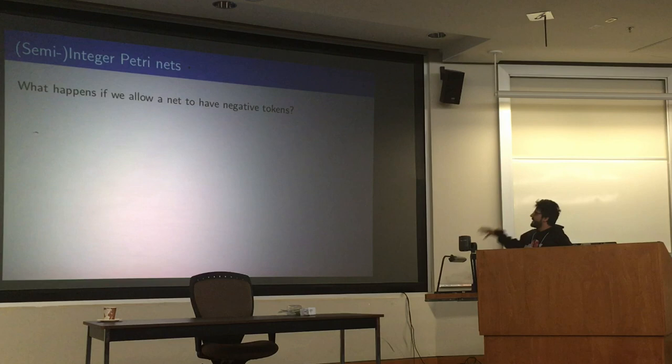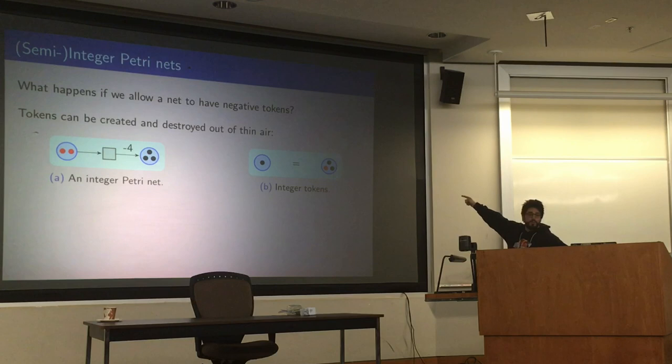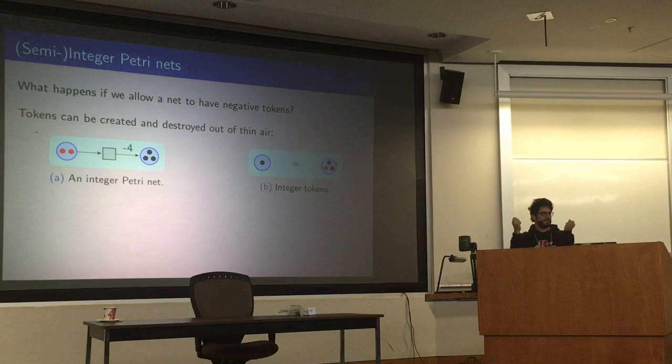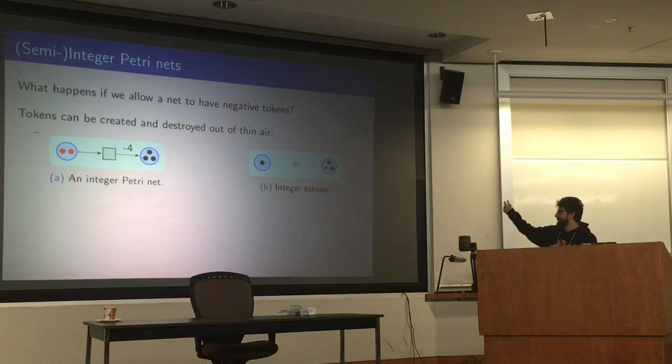So what this paper is about is, what happens if we have negative tokens? First thing that we notice is that with negative tokens that are represented as red dots here, you can get tokens out of thin air, like in figure B, because the idea is that a negative token and a positive token should annihilate with each other.